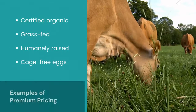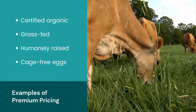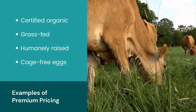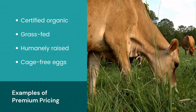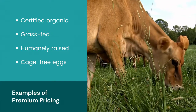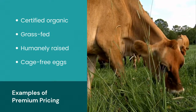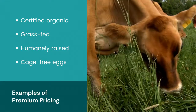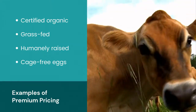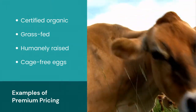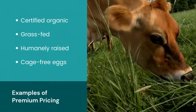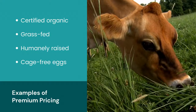One downside of price-trigger payments is that they don't take into consideration any premium pricing or value-added commodities. For example, if you are an organic dairy farmer, your payment rate will still be based on conventional wholesale commodity prices, even if your milk commands a much higher price.